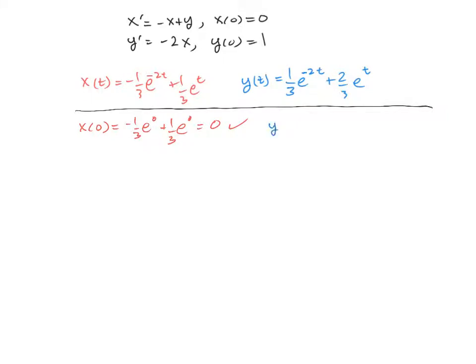If we check out y(0), that's going to be 1/3 e^0 plus 2/3 e^0. And that is 1/3 plus 2/3, which makes 3/3 equals 1, so that checks out as well. So that's not a verification that we actually got the problem right, but it's really good evidence that we're on the right track.